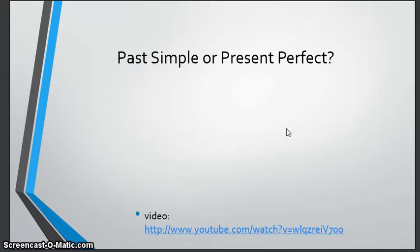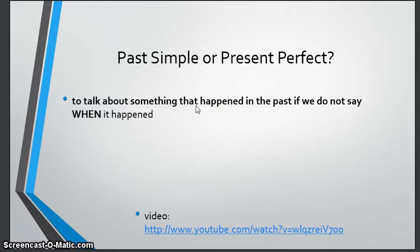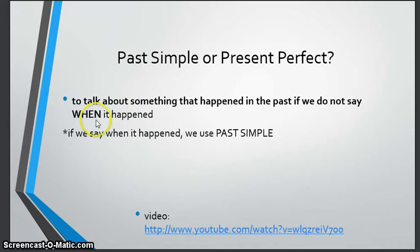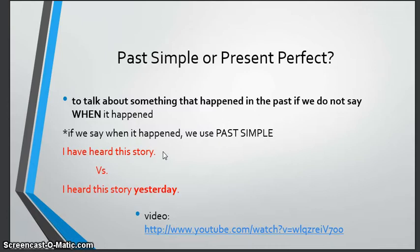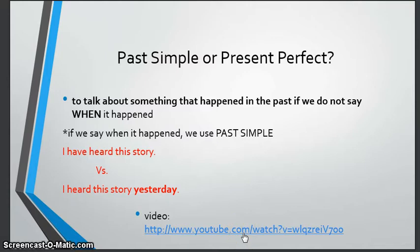Remember the difference between past simple and present perfect: we use present perfect to talk about something that happened in the past but we don't know when. If we say exactly when it happened — the time it started or finished — we use past simple. For example, 'I have read this story' is present perfect because we don't say when. But 'I heard this story yesterday' is past simple because of the word 'yesterday.'